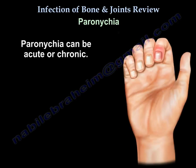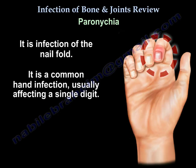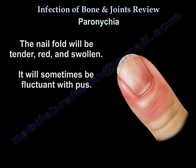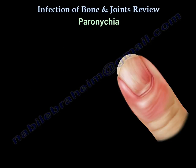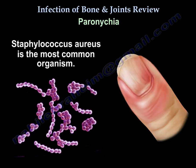Paronychia can be acute or chronic. Acute paronychia is infection of the nail fold. It is a common hand infection, usually affecting a single digit. The nail fold will be tender, red, swollen, and sometimes fluctuant with pus. It can happen from injury or trauma to the paronychial fold — such as hangnail, nail biting, manicuring, or thumb sucking. Staph aureus is the most common organism.